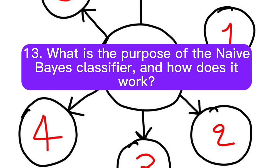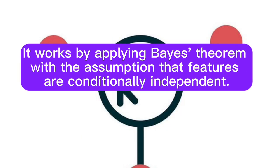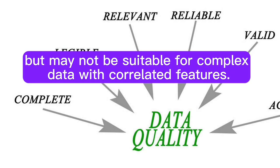Question 13: What is the purpose of the Naive Bayes classifier, and how does it work? Answer: The Naive Bayes classifier is used for classification tasks, especially in text and language processing. It works by applying Bayes' theorem with the assumption that features are conditionally independent. It's computationally efficient and performs well for text classification tasks, but may not be suitable for complex data with correlated features.